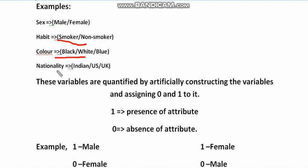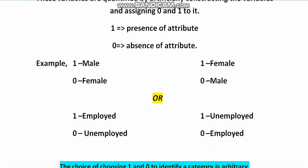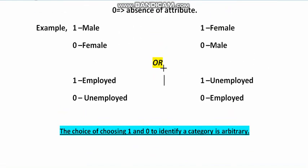These variables are quantified by artificially constructing the variables and assigning 0 and 1 to them. For example, 1 indicates presence of an attribute and 0 indicates absence of an attribute. You may be clear with a simple example of this.